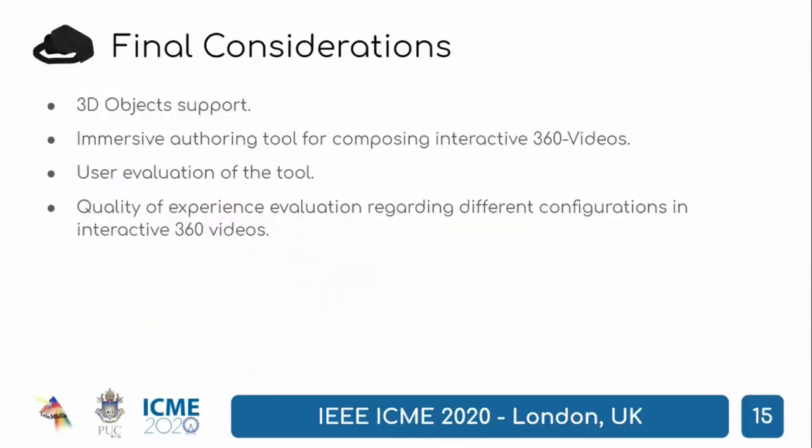One of our current limitations is that we do not yet support 3D objects. Currently, our model can be easily used through text editors, with an implementation integrated with the Unity engine. Our final goal, however, is to use the proposed model as a basis for our ongoing effort to create an immersive altering tool for interactive 360 videos. Thus, how to best interact with such a tool—how to interactively define the proposed media elements, hyperlinks, mirror, etc., how to expose media in space, how to navigate among 360 video timelines during authoring time—is also ongoing work.